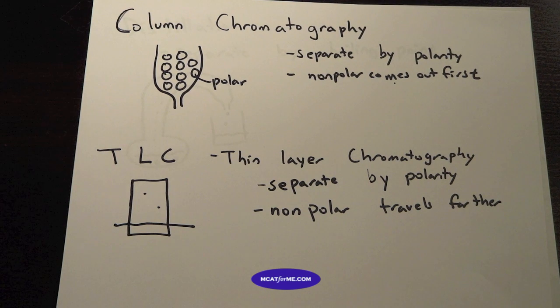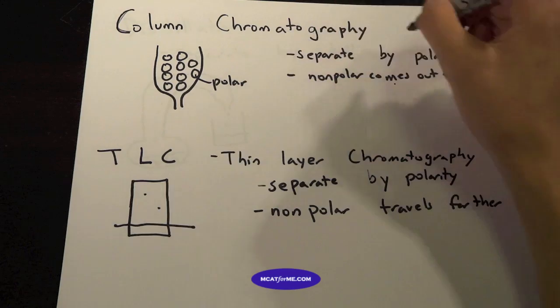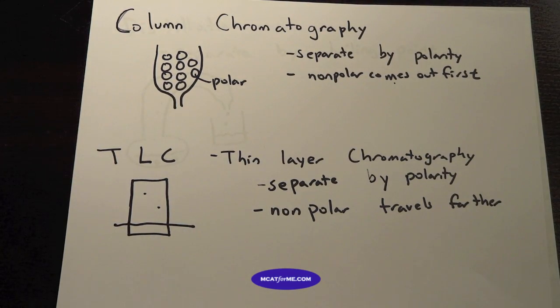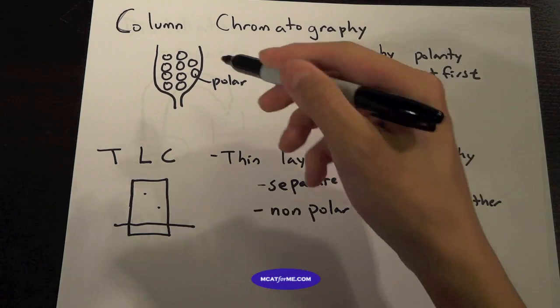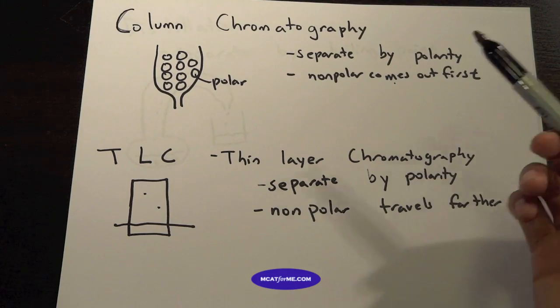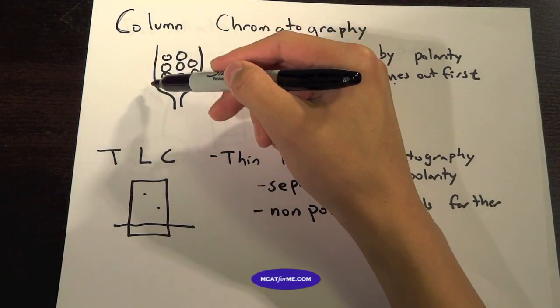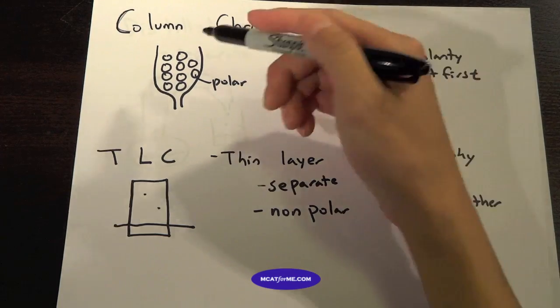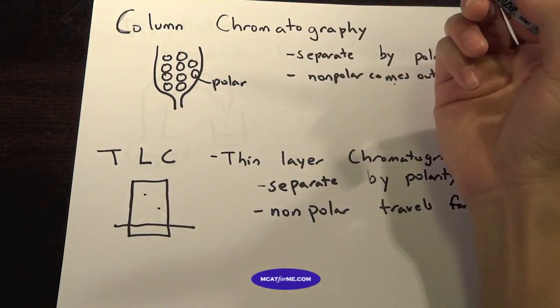So we'll look at the next two. Column chromatography is a type of chromatography, which means that you're separating by polarity. Chromatography always means separate by polarity, any type of chromatography. So column chromatography, how it works, is you have this little container, this little tube with these beads in them. They're polar beads.